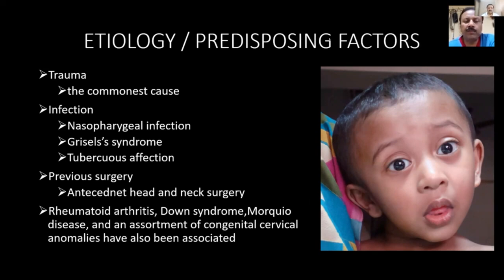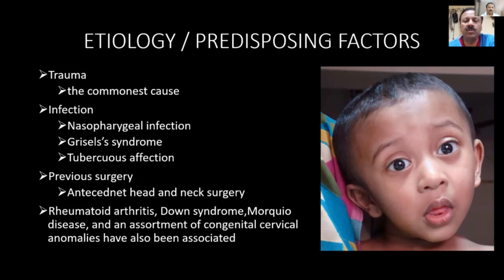An assortment of disorders ranging from rheumatoid arthritis to Down syndrome, Morquio syndrome, and some congenital cervical anomalies — including a failure of the pro-atlas leading to absence of the posterior arch of the atlas — have been importantly associated with this condition.